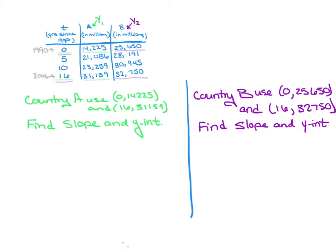As we look at our data table, this particular problem asked us to use the data for specific points. It wanted us to look at 1990 and 2006. So for Country A, that means I'm going to use the data point (0, 14,225) and (16, 31,159). So I jotted those two points down here that I'll need to use, and then you're going to need to find the slope and the y-intercept.